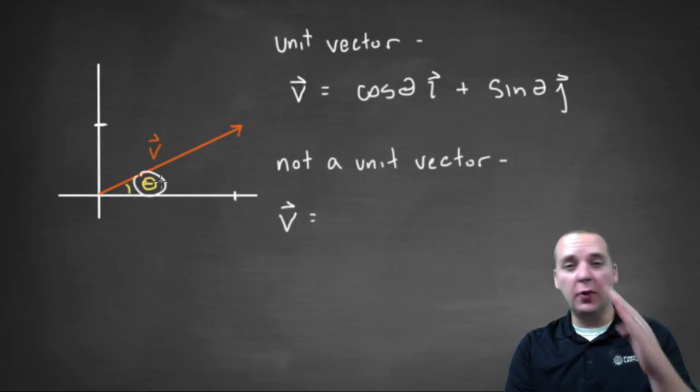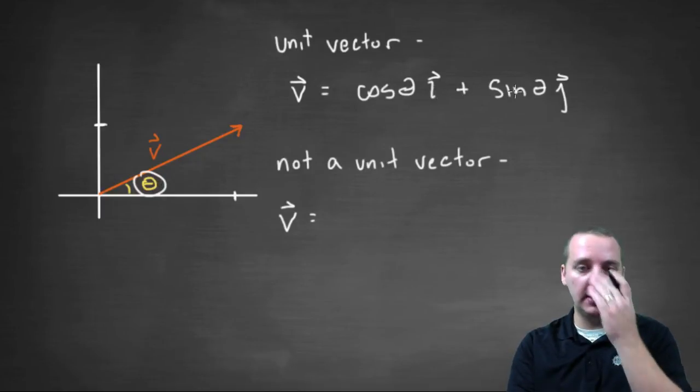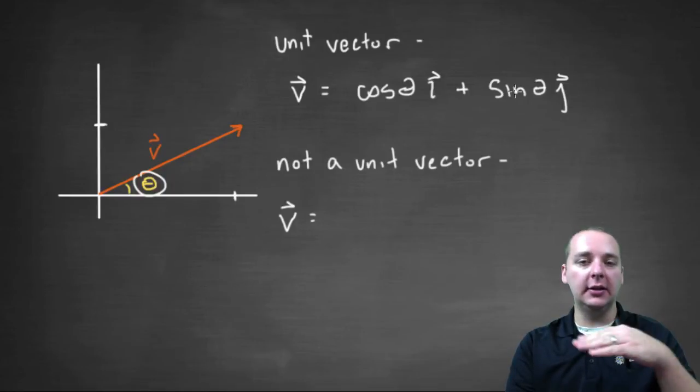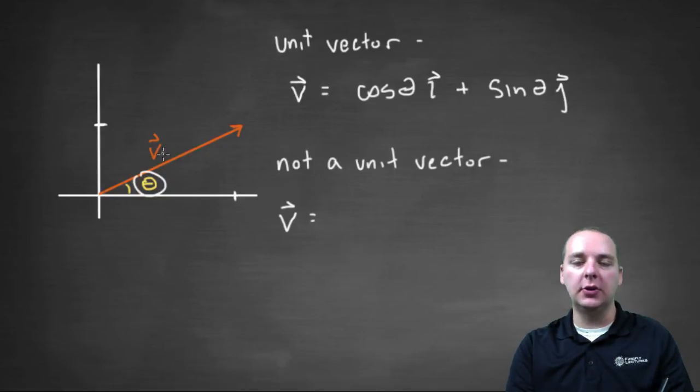So your vector, your forty-five degree vector that was a unit vector, would be root two over two i plus root two over two j, which is correct, right? So that cosine theta comma sine theta simply gives you the terminal point that's around the unit circle.